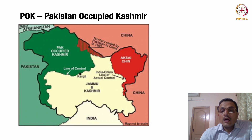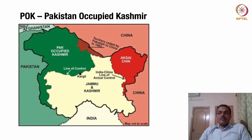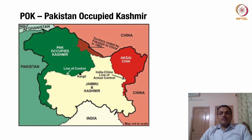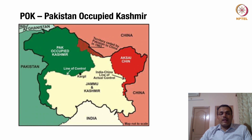You can see the line of control on both the western and eastern fronts with China. The history of POK starts with how Maharaja Hari Singh, the ruler of Jammu Kashmir at that point of time, wanted to keep Jammu Kashmir as an independent state. While India and Pakistan were getting divided through partition, Jammu Kashmir thought it should remain independent — neither aligning to Pakistan nor to India.